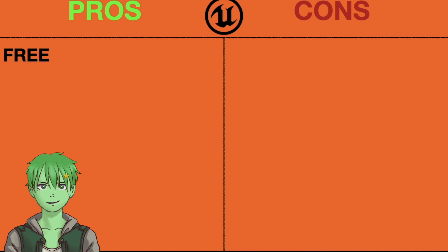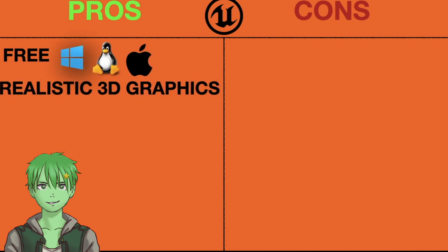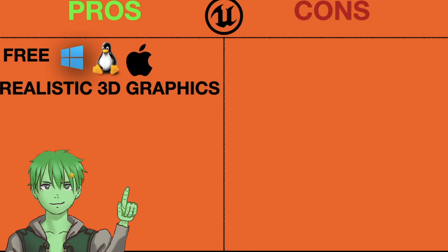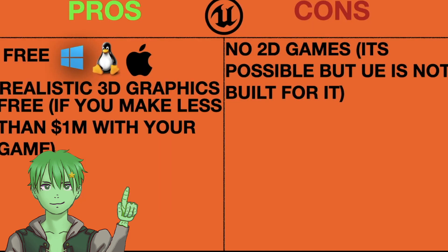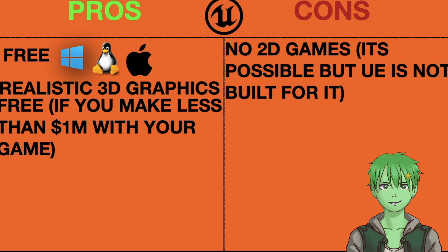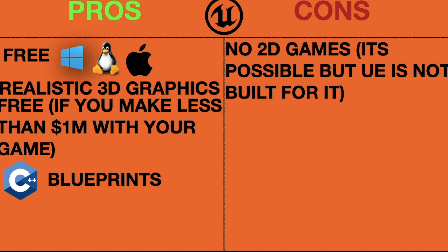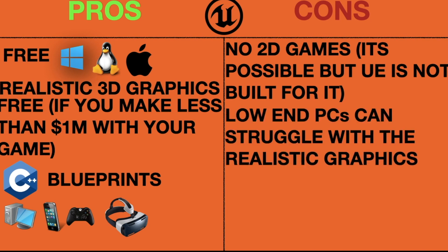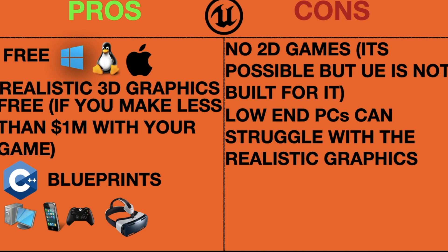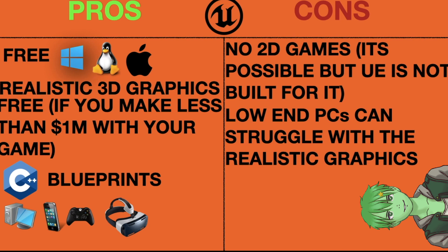Number 3: Unreal Engine. Unreal Engine is a free game engine for Windows, Linux and Mac, mostly known for its amazing 3D graphics pipeline which can make the visuals of your game look very realistic. The engine is completely free to use if you make less than $1 million dollars with your game, which is very unlikely unless you're a AAA company. It uses the C++ programming language, but you can also use Blueprints — a visual scripting language — to create your games. You can export to PCs, mobile devices, consoles and VR. Because of its realistic graphic rendering it does not work well on old or low-performing machines, but Unreal Engine is a great choice for making 3D games and there are enough tutorials to get you started.